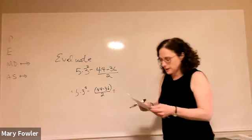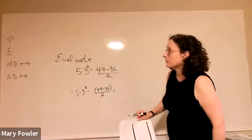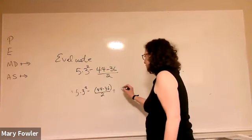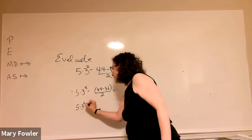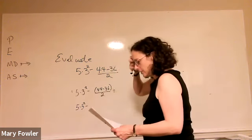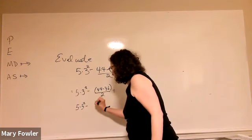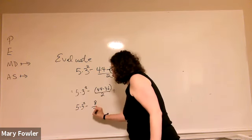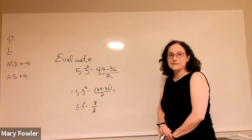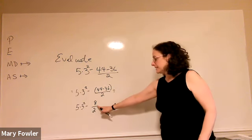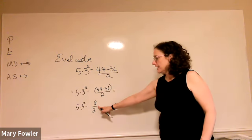And so look ahead - we're going to take into account the PEMDAS, the parentheses. So we have five times three squared minus, numerator is eight, denominator is two.